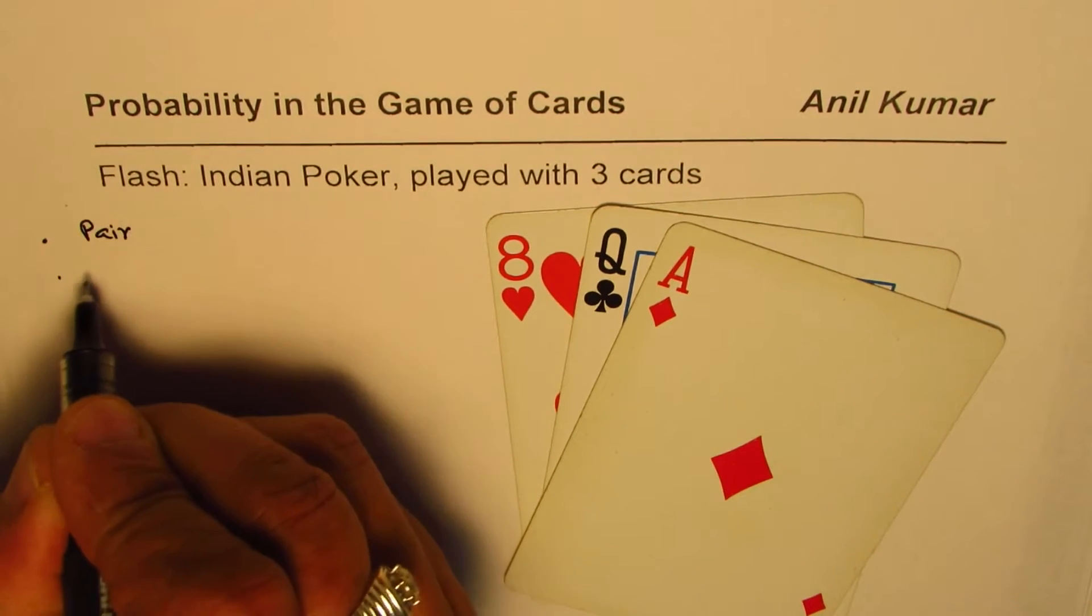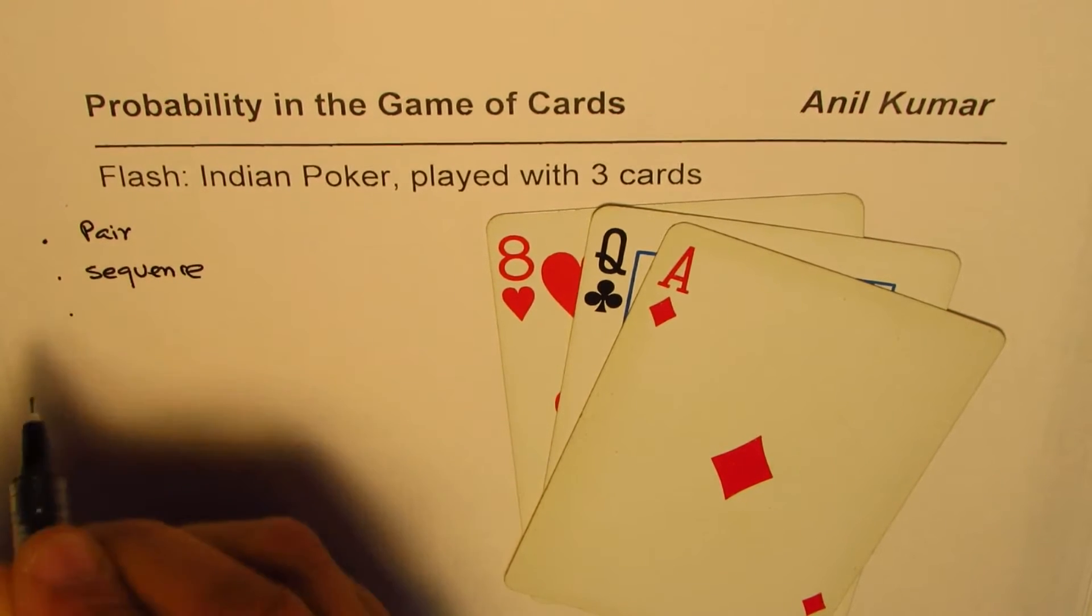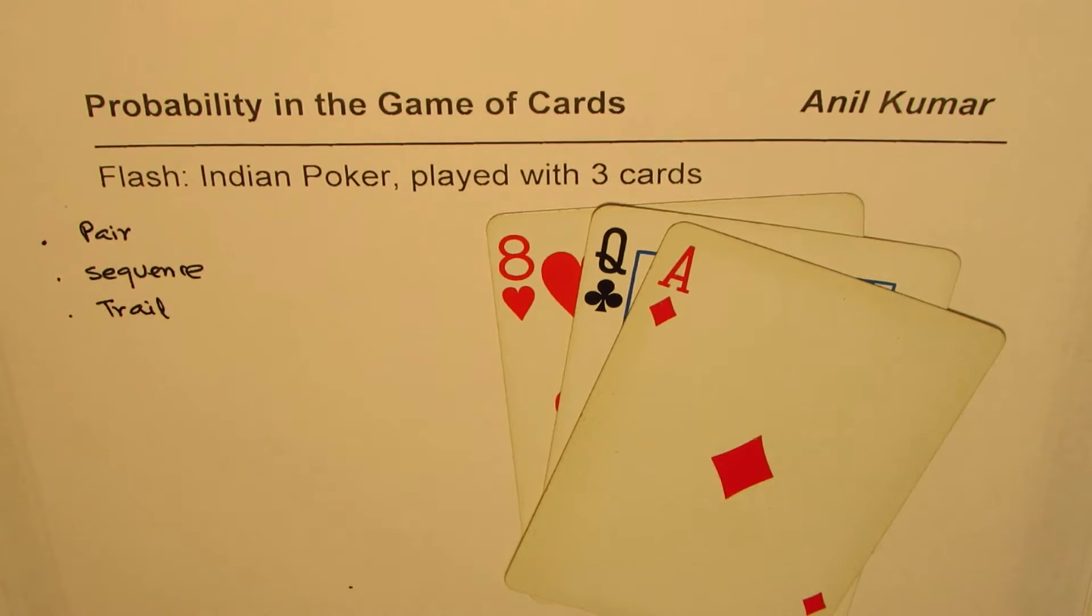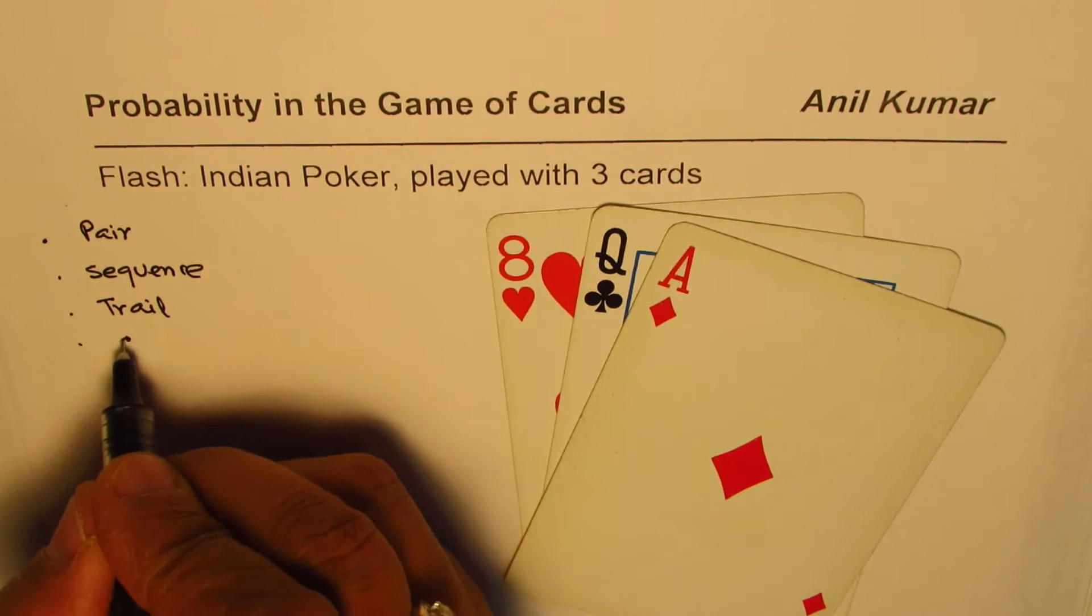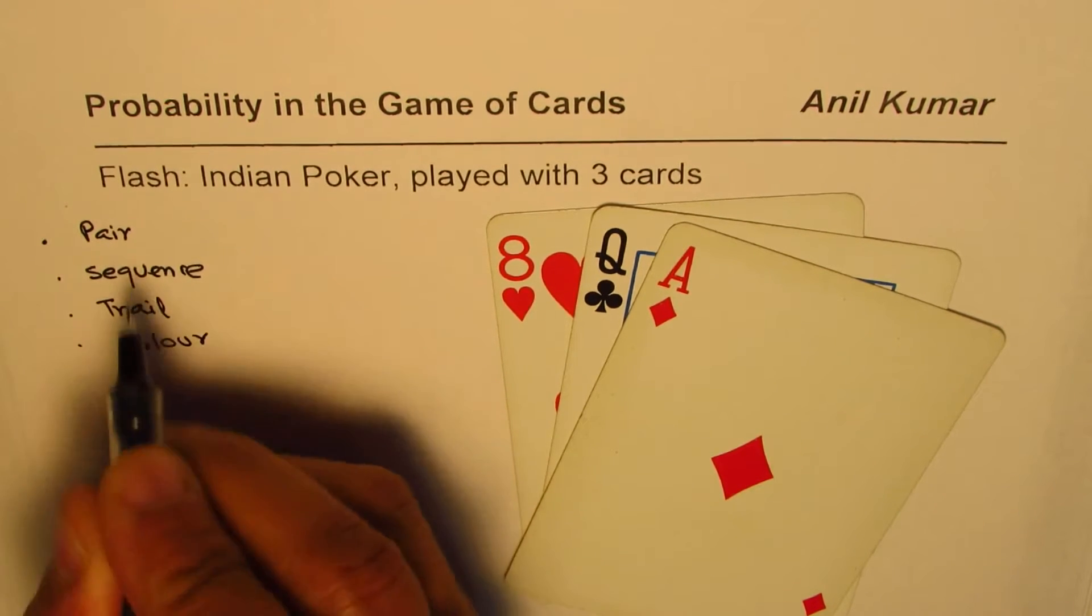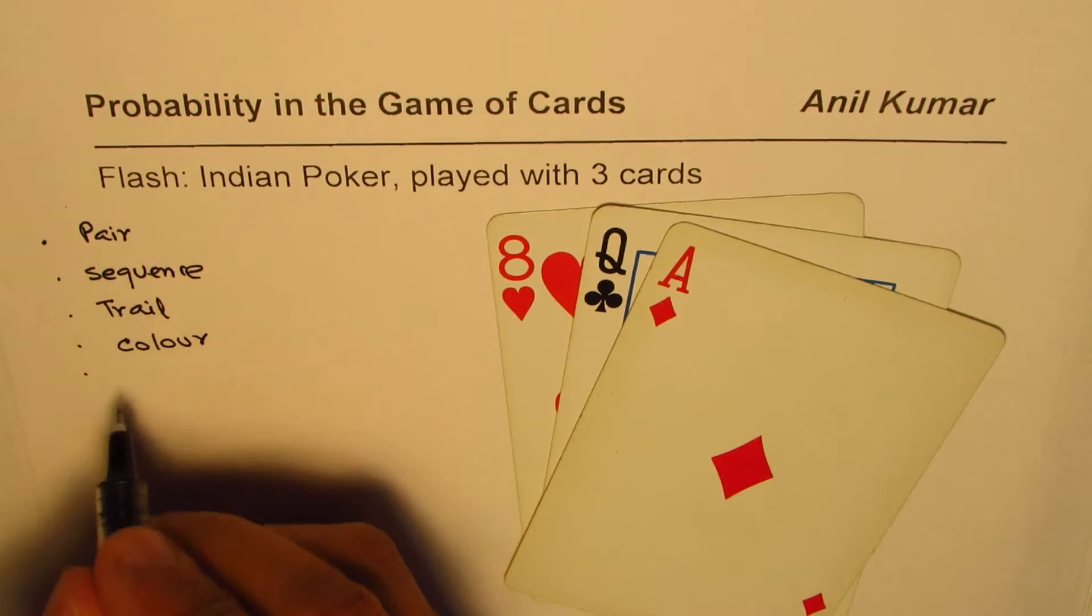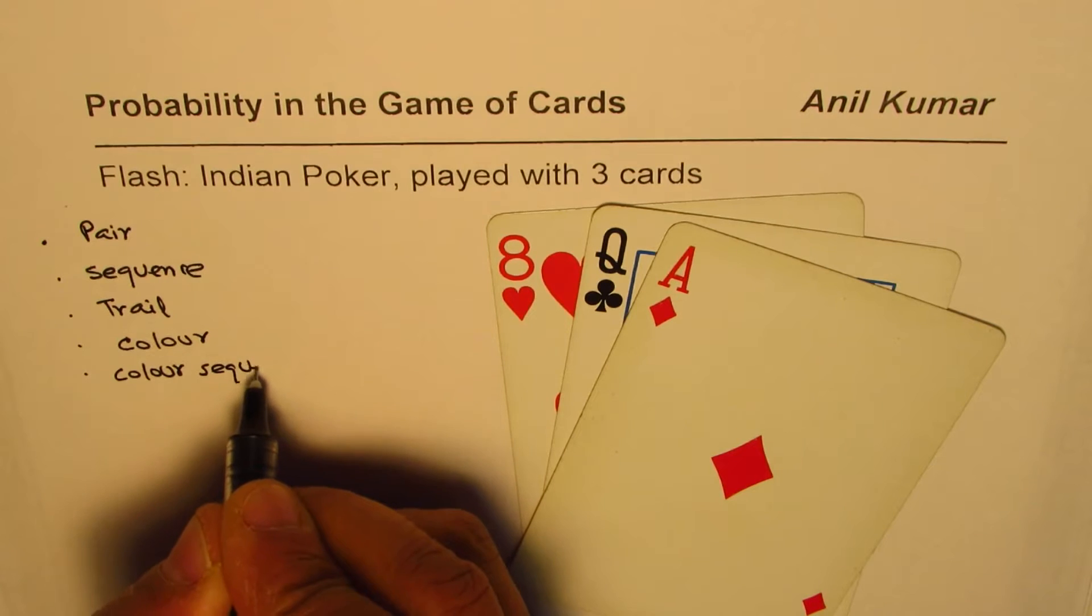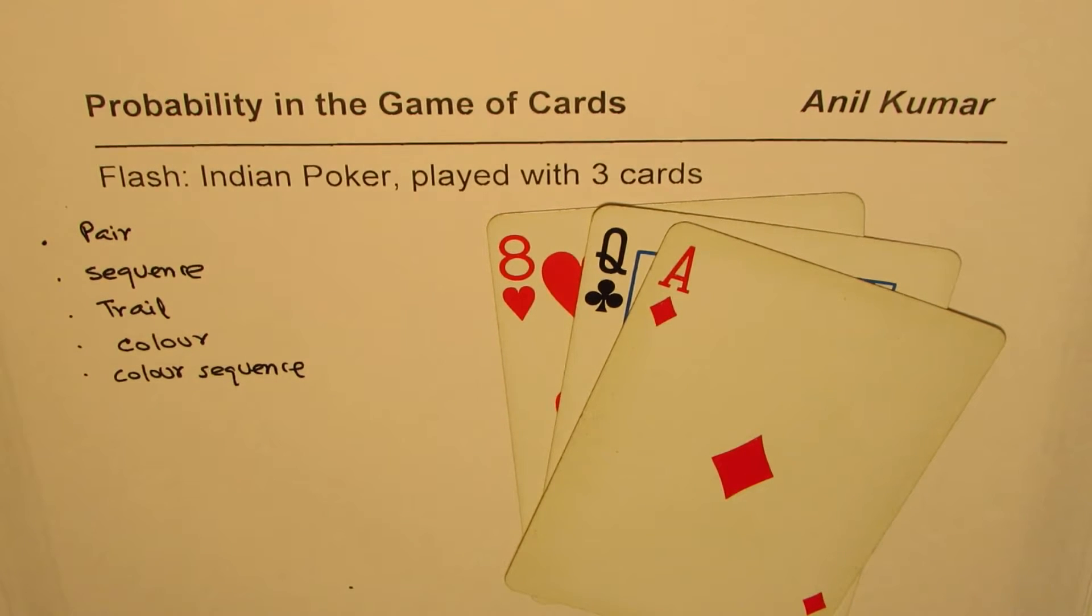Let me list those which are very important. We have a pair, we could have a sequence, we could have a trail. Trail is the ultimate. And in between we could have also a color, same kind. We could have all these combinations. We could also have color and sequence.